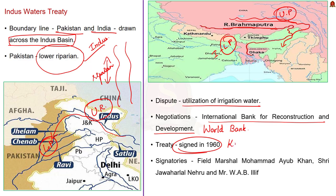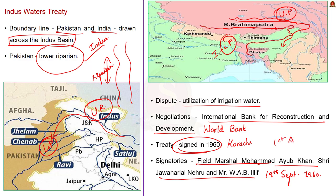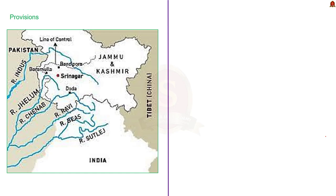The treaty was signed by Field Marshal Mohamed Ayub Khan, the then President of Pakistan, Shri Jawaharlal Nehru, the then Indian Prime Minister, and Mr. W.A.B. Illif of the World Bank on 19th September 1960. The treaty, however, is effective from 1st April 1960. Now let us move on to see some important provisions of the treaty.